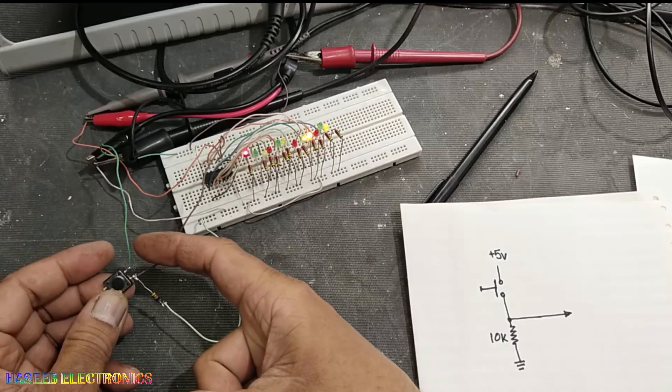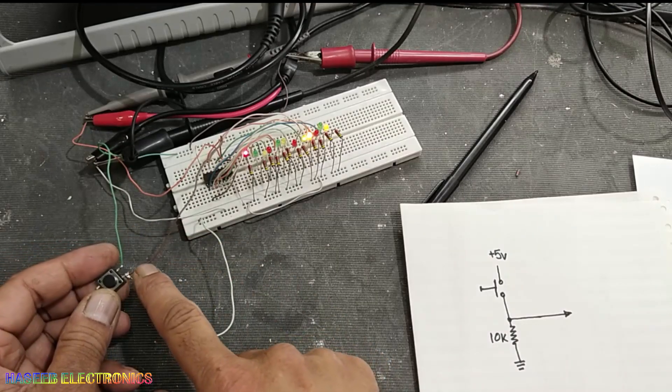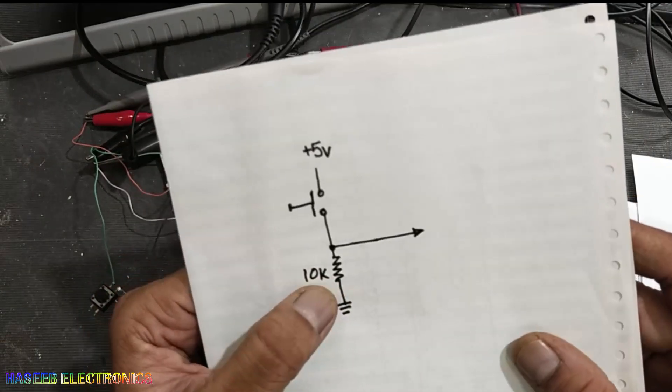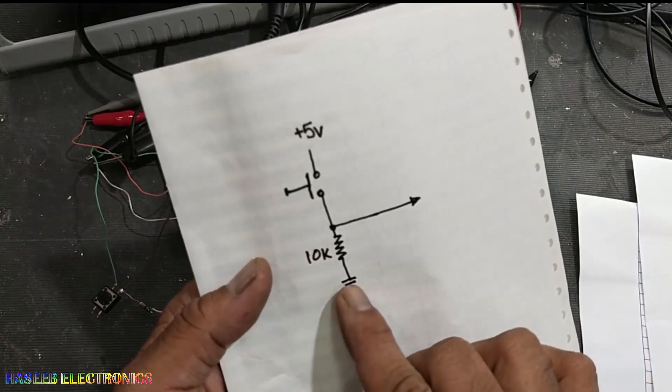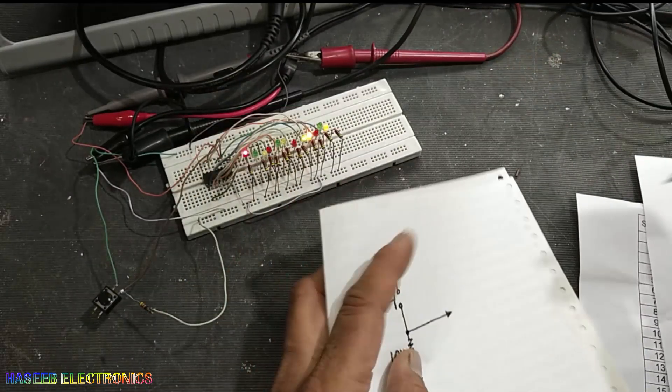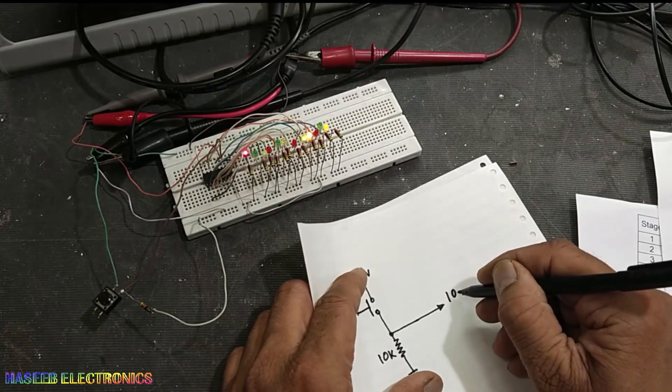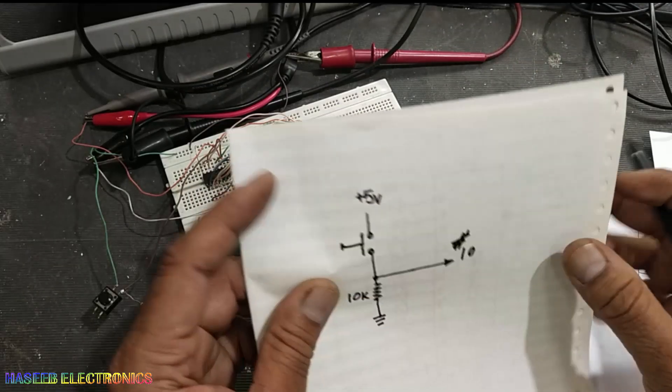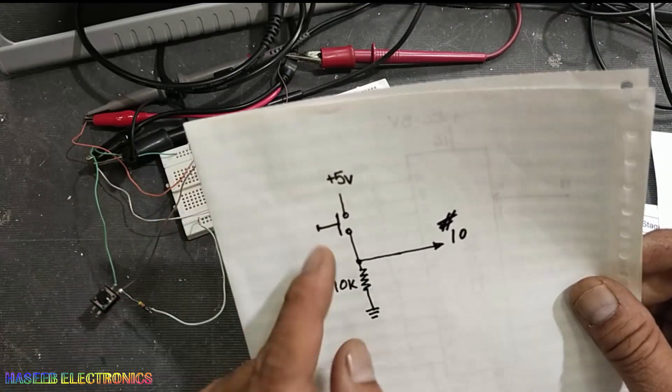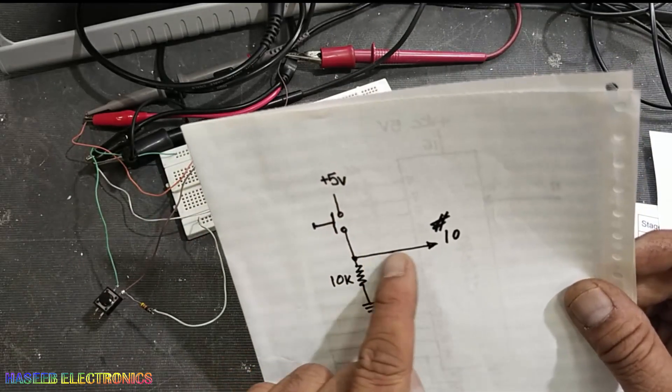One side of the switch gets 5 volts. The second side, I connected a 10k resistance, and the resistor's one end is grounded. This pin will go to pin number 10, going to pin number 10 of the IC. So when we press, it will pass 5 volt signal like this.